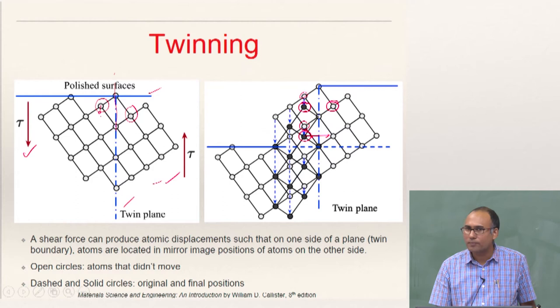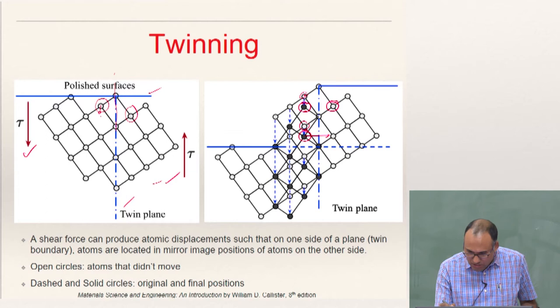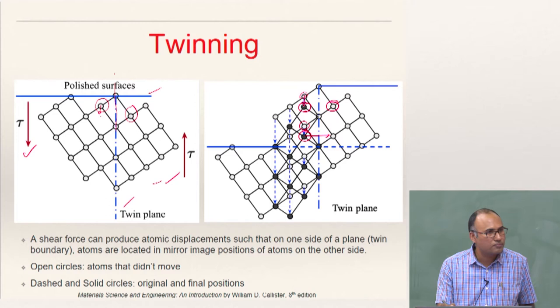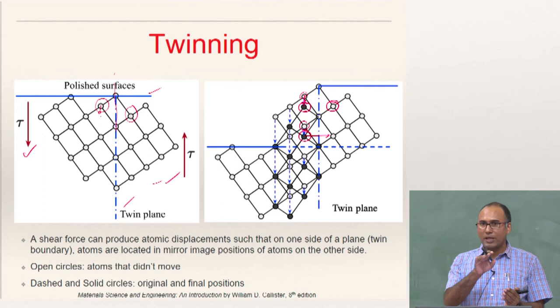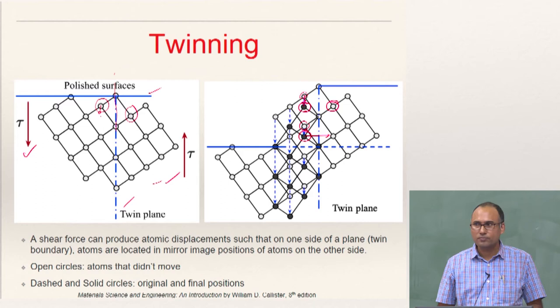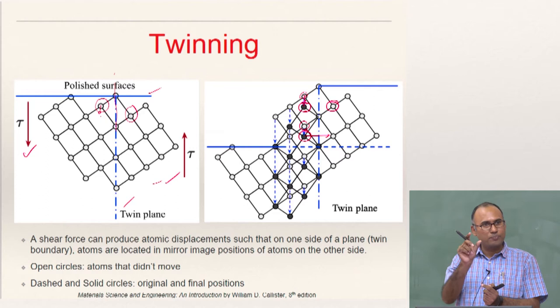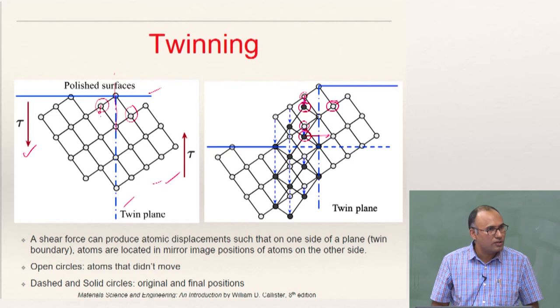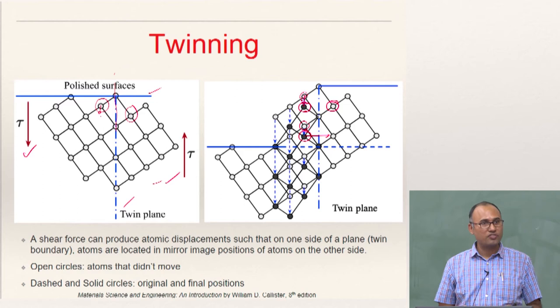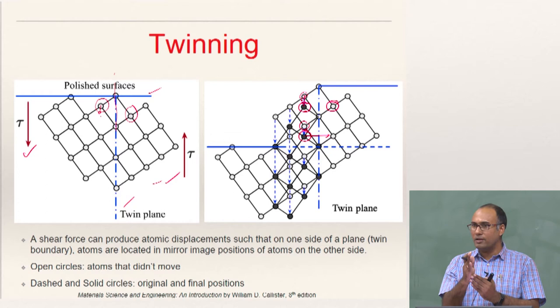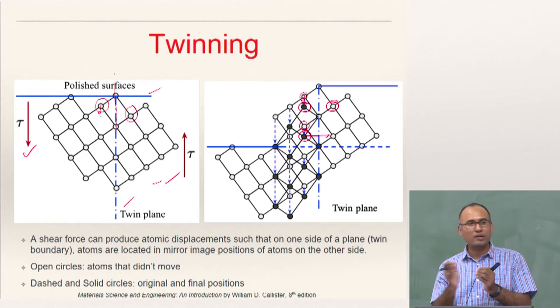If you look at the amount of atomic displacement, it is actually less than the interatomic spacing in that direction. Whereas in the case of slip, the amount of slip is always integer multiples of your Burgers vector — the Burgers vector is the direction of slip. The deformation in twinning is constrained by the requirement that about the twin plane, you should have a mirror image of atoms from one side with the atoms on the other side.